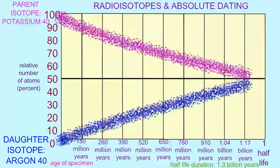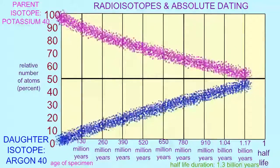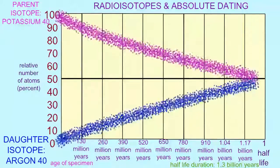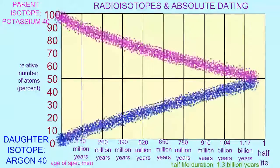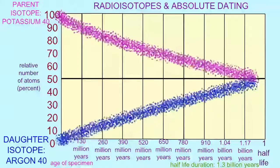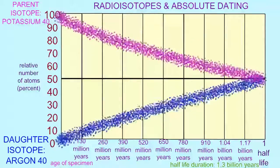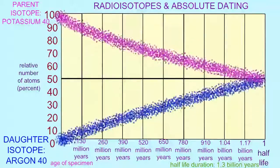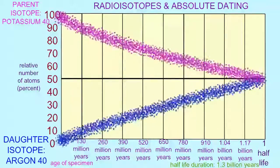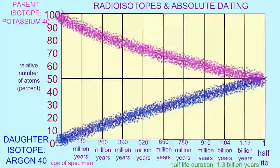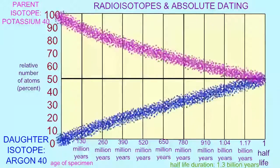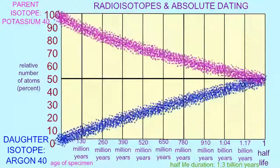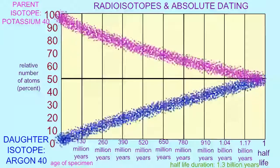One can trace the decay and decrease of potassium-40, the parent isotope, and the increase of the daughter isotope, argon, in order to determine the age of a specimen.